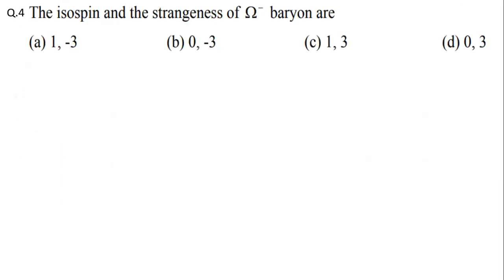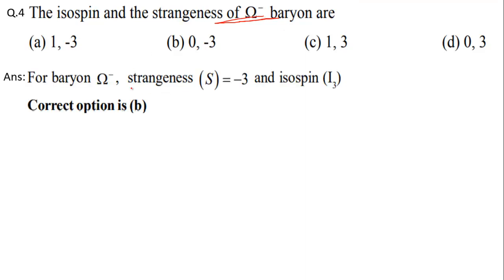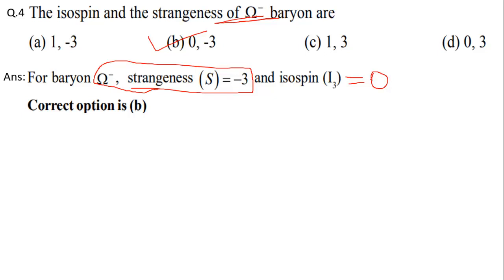Question 4: The isospin and strangeness of omega minus baryon are — you need to memorize the strangeness of certain particles. The omega minus is a very important particle because its strangeness is uniquely −3. Only one particle has strangeness −3, and that is omega minus. Its isospin I₃ is 0. So the correct option is B: isospin = 0, strangeness = −3.